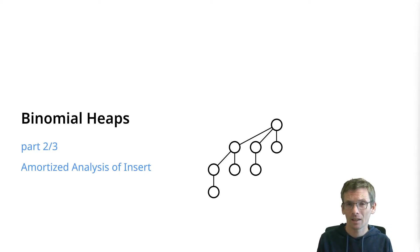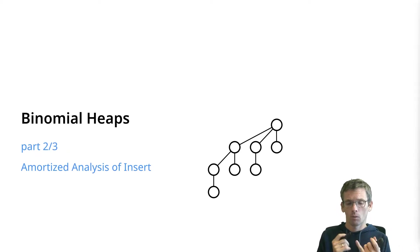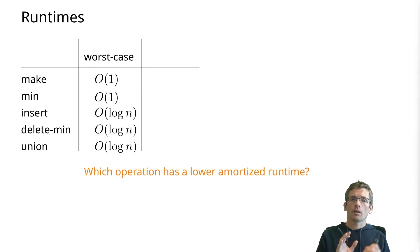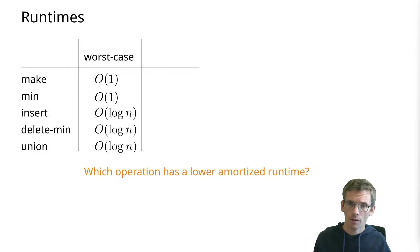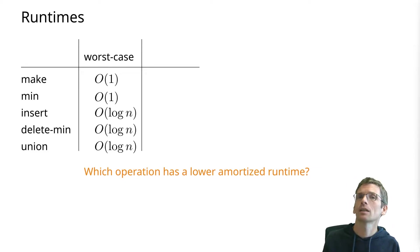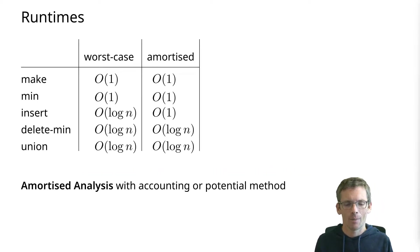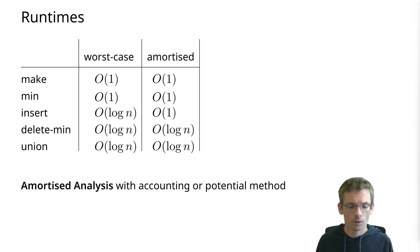Let's do an amortized analysis of binomial heaps. In part one we saw what a binomial heap is, the various operations and their worst case running time. For one of those operations you would expect that typically it's actually faster than the worst case running time predicts, and that is the insert, as the video title already gave away. So we want to prove that insert amortized has constant running time, and therefore we need an amortized analysis.